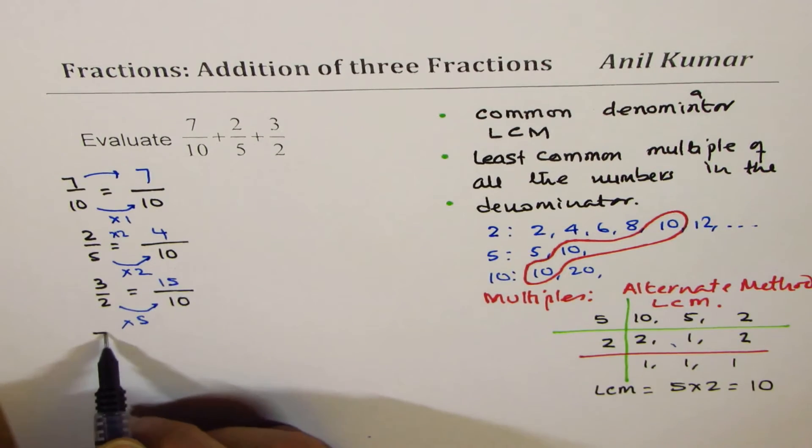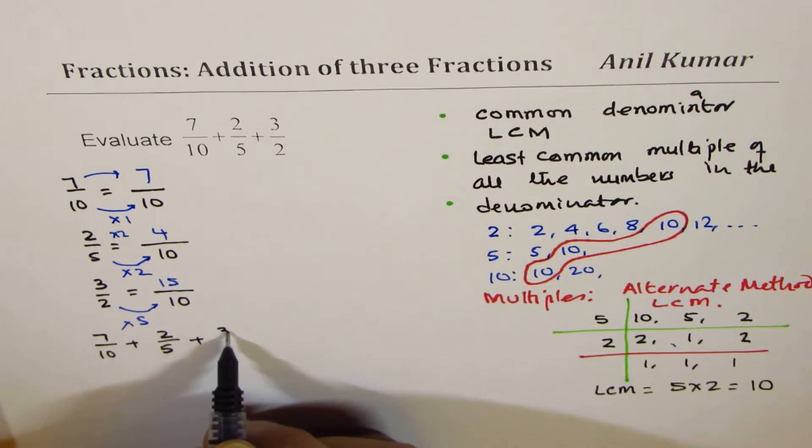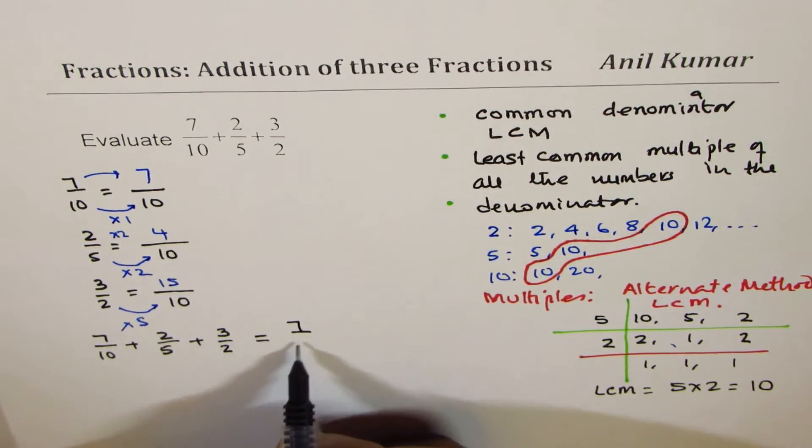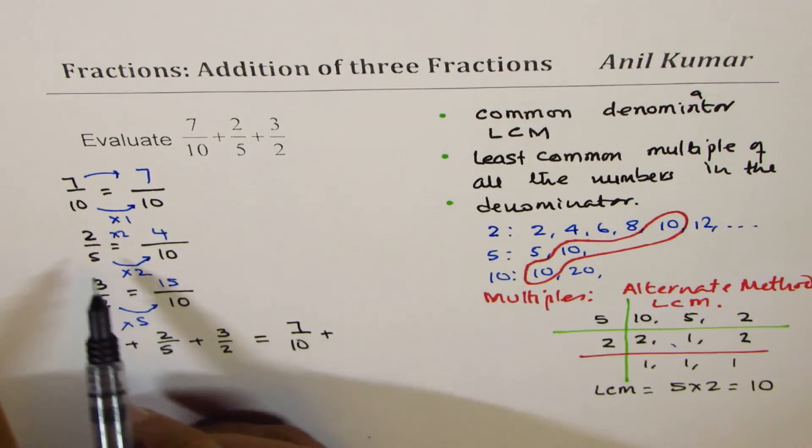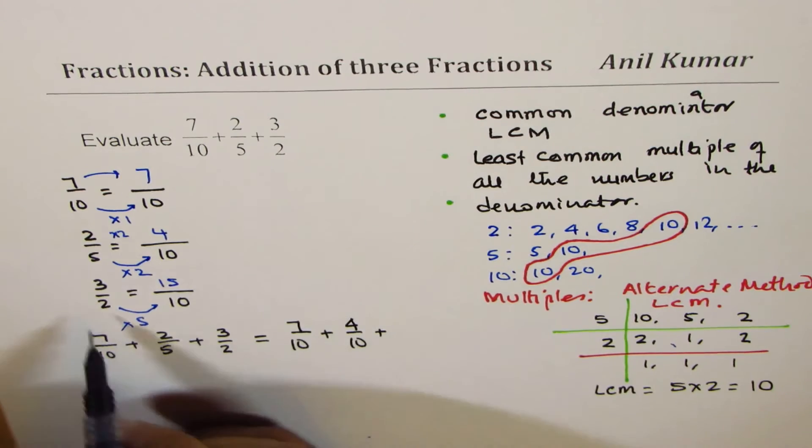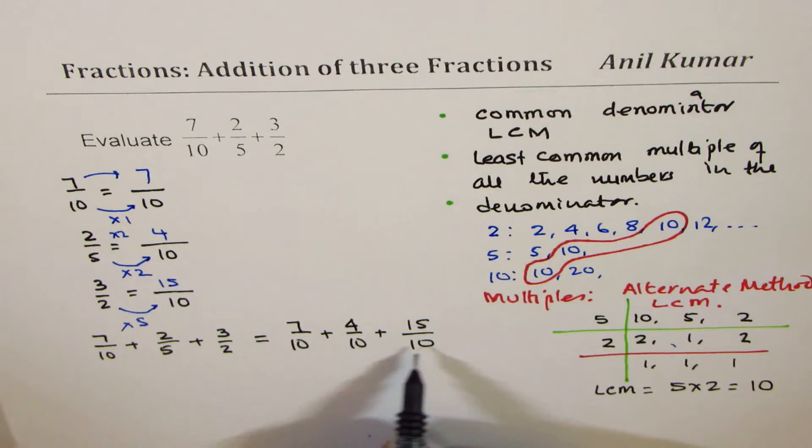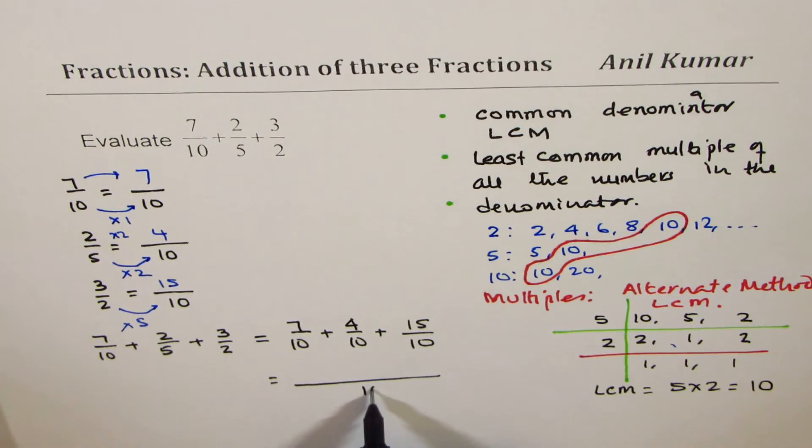You can rewrite the fraction which is 7 over 10 plus 2 over 5 plus 3 over 2 as equal to 7 over 10 plus 4 over 10 plus 15 over 10. Since the denominators are common, another way of writing it is like this: common denominator of 10, the numerators can now be added straight away, 7 plus 4 plus 15. Do you see that?